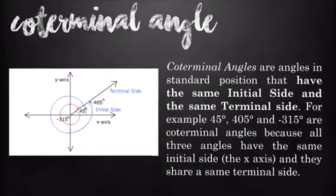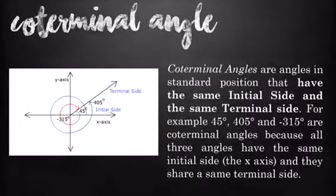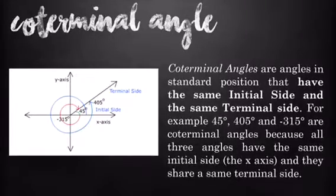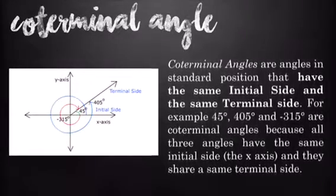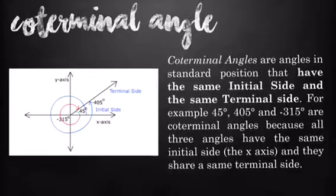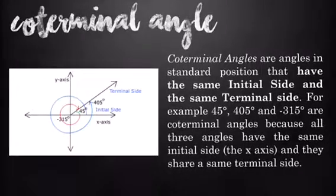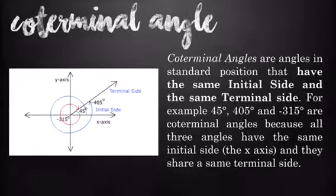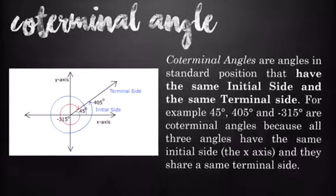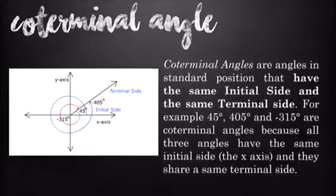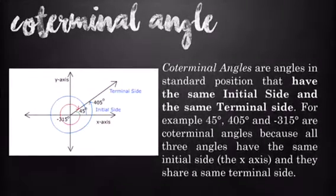Coterminal angles are angles in standard position that have the same initial side and the same terminal side. For example, 45 degrees, 405 degrees, and negative 315 degrees are coterminal angles because all three angles have the same initial side, which is the x-axis, and they share the same terminal side.